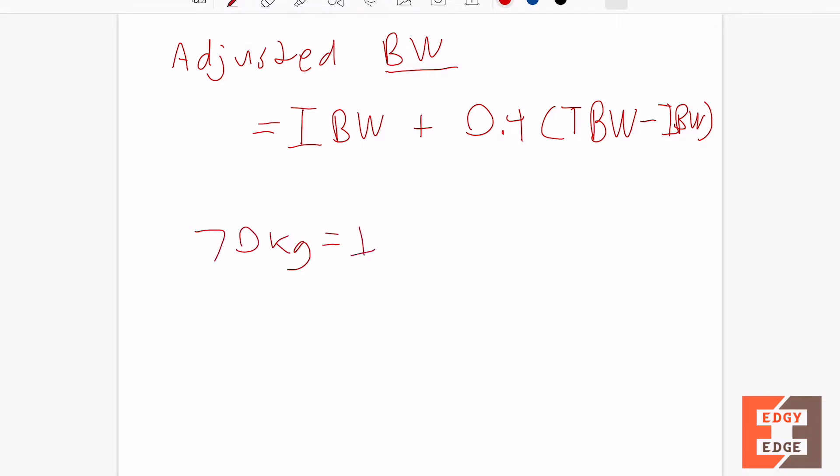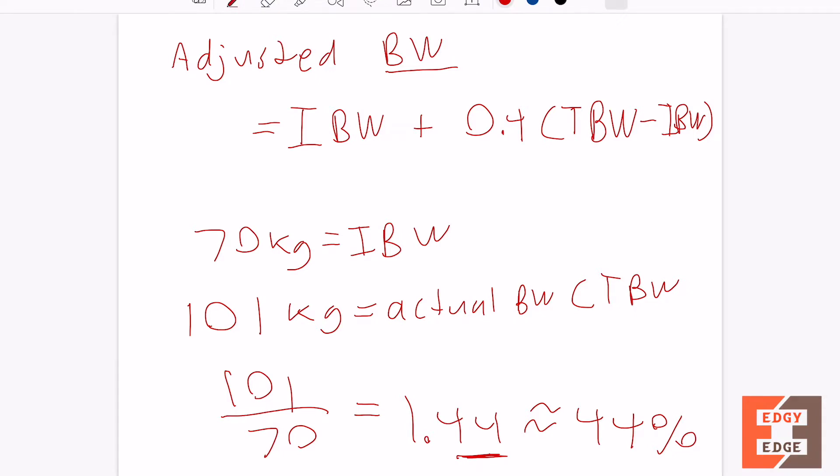They're actually weighing 101 kilograms, their actual body weight or abbreviated TBW here. If you do a ratio here, 101 over 70, let's see what we'll get. 101 divided by 70, we will get 1.44. So this is 44%. His 101 kilograms, he's 44% over his ideal body weight of 70.